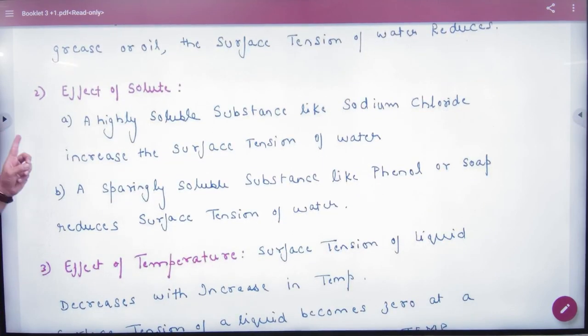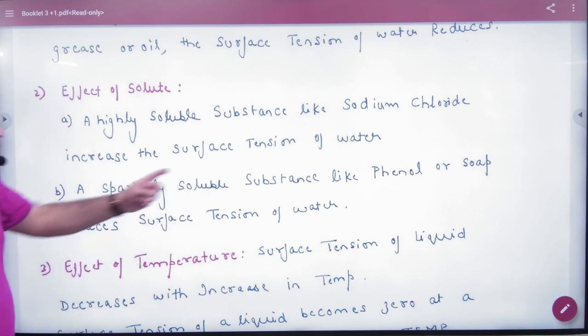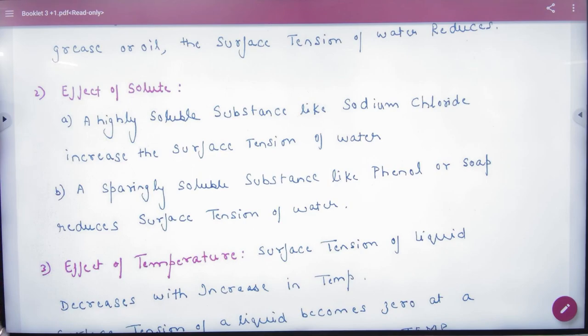Effect of solute: A highly soluble substance like sodium chloride increases the surface tension of water. A sparingly soluble substance like phenol or soap reduces the surface tension of water.